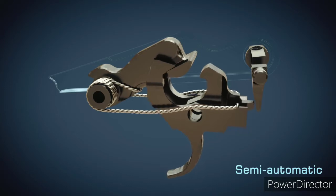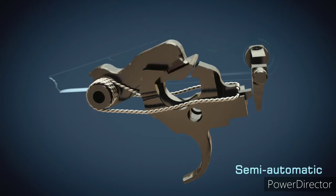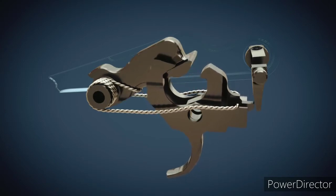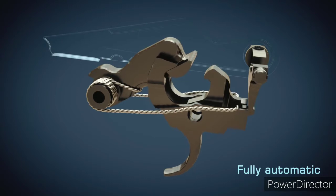As soon as the trigger is pressed, the hammer is released. The disconnector catches the hammer after firing. The trigger must be released before another shot can be fired. The hammer is then immediately caught by the trigger and the gun is ready to fire again.